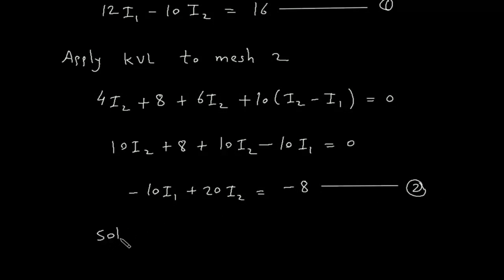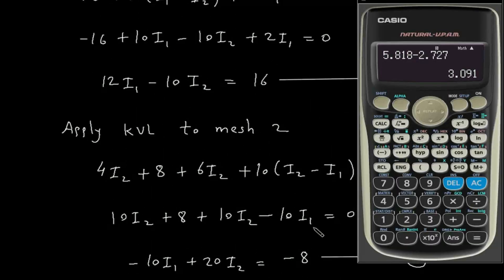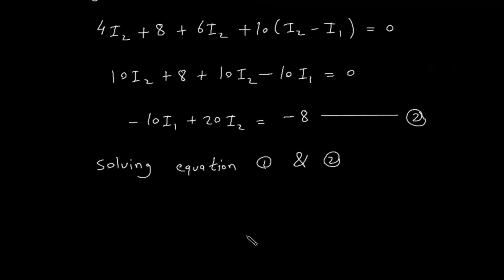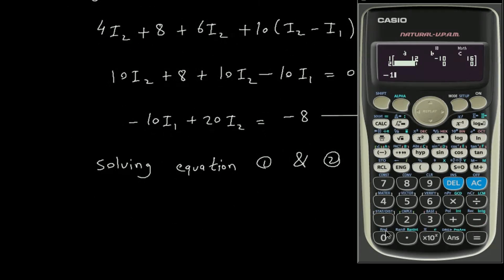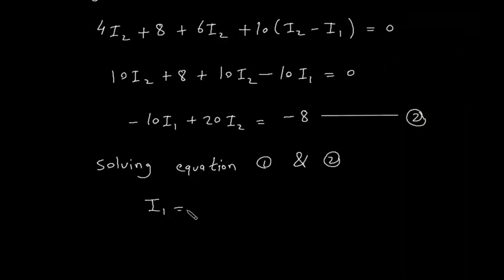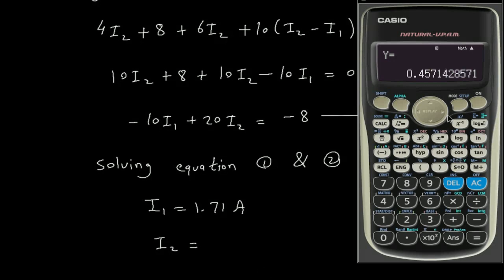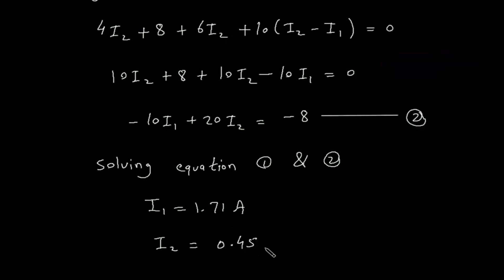Now solving equations 1 and 2 simultaneously. From equation 1: 12I1 minus 10I2 equals 16. From equation 2: minus 10I1 plus 20I2 equals minus 8. Solving: I1 equals 1.71 amperes and I2 equals 0.45 amperes.